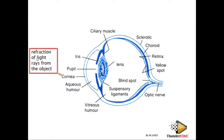Number one is the cornea. The cornea is very important in the refraction of light rays from the object. When light comes from the object and falls on the eye, the first layer to refract — to bend — this light is the cornea.